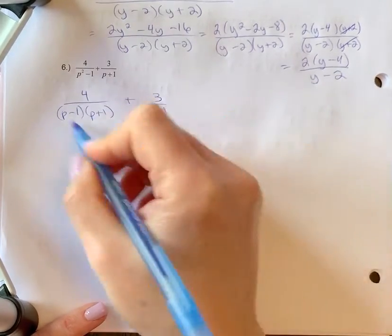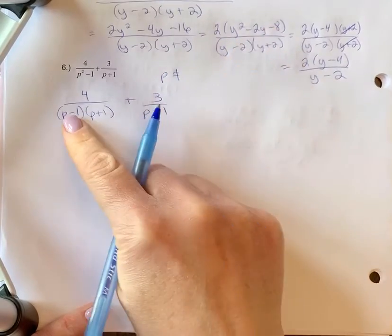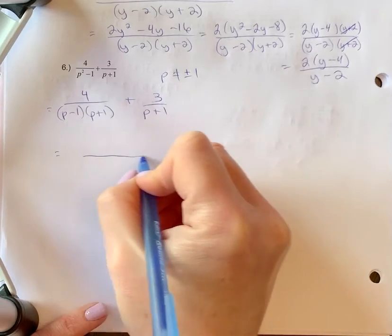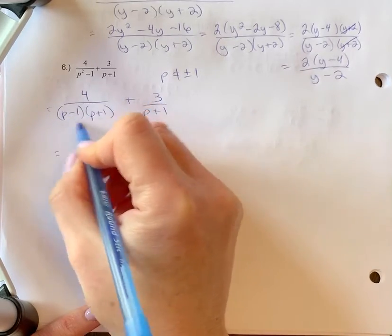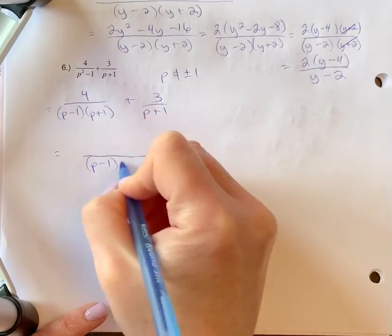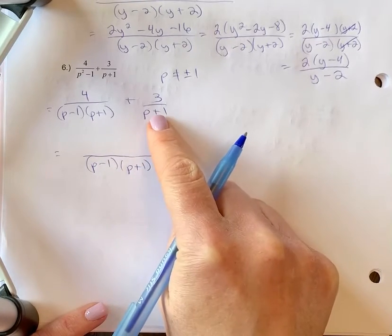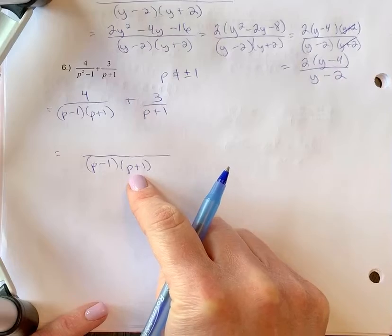When we look at our denominator for our restrictions, we have p cannot equal plus or minus one. Let's get a common denominator. So we need to have both of the binomials as part of our denominator. P plus one's already part of this one, it's just one of them in here and we just need one there.